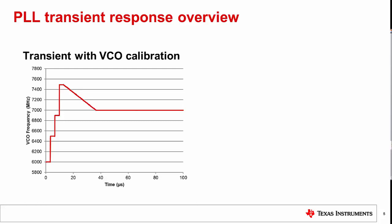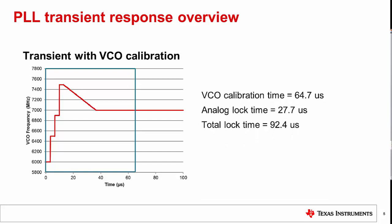VCO calibration is required to select the correct VCO core and calibration settings associated with the target frequency. Additionally, it brings the VCO frequency much closer to the target frequency, therefore reducing the analog lock time. The calibration routine changes the transient response of the PLL by both adding the VCO calibration time and also impacting the analog lock time. The total time taken by most modern multi-core RF synthesizers to switch between frequencies depends upon two factors: the VCO calibration time and the analog lock time.